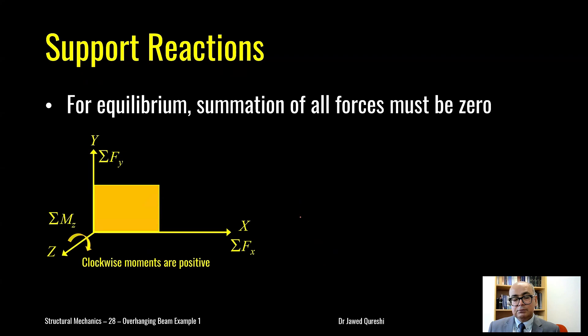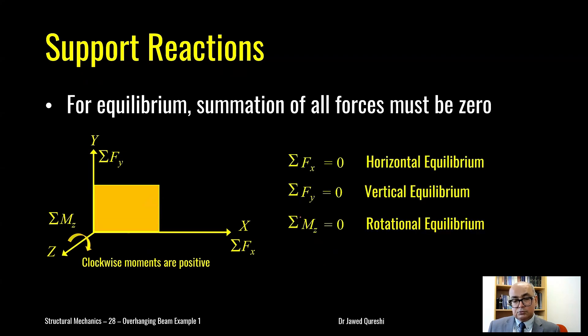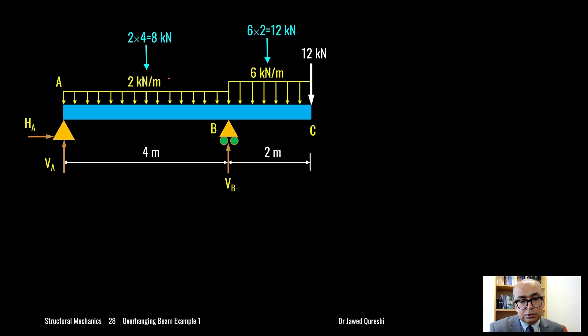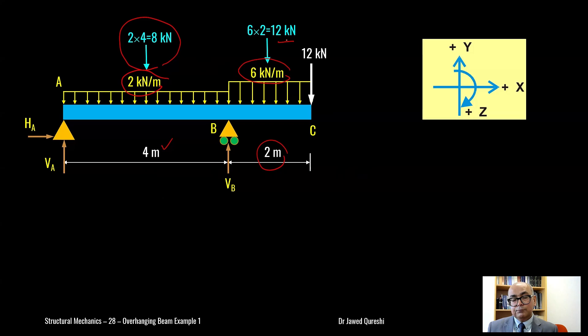I'll be using three equilibrium equations to solve this structure. Summation of horizontal forces equal to zero, summation of vertical forces equal to zero and summation of moment equal to zero. And this loading 2 kN will have a total load of 2 times 4. It is spread on 4 meters. The total load will be 8 kN and this uniformly distributed load 6 kN per meter will be multiplied with the span which is 2 meters, so total load is 12 kN. The sign convention is vertically upward forces are positive, rightward horizontal forces are positive and clockwise moments are positive.